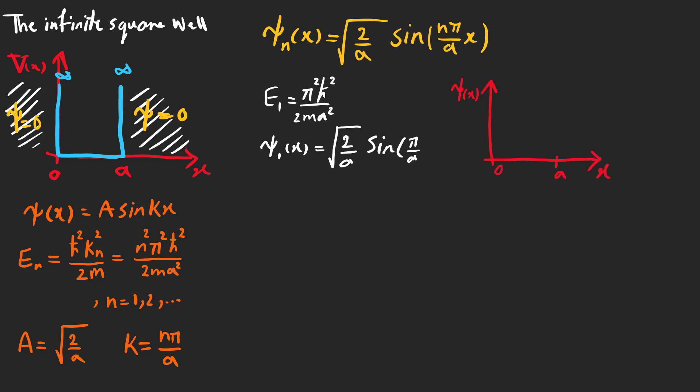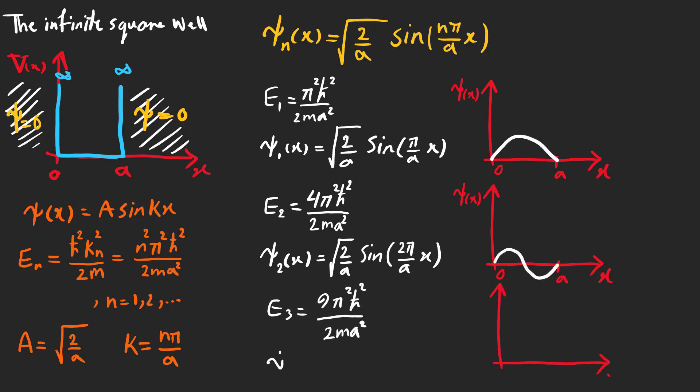Now let's plot the first three ones. Psi_1 is called the ground state and the others are excited states.